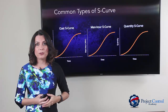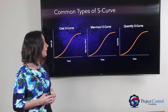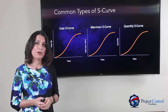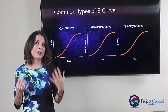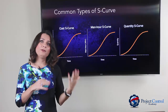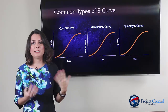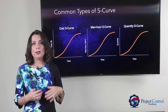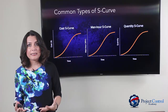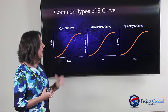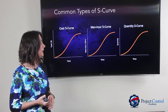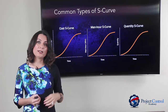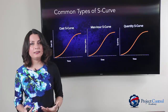A cost S-curve shows how you are going to spend your budget over time — a cash flow curve. Another popular S-curve used in projects is the manpower or FTE (full-time equivalent) curve, basically showing the available resources you have over time, either as headcount or man-hours. That's also very popular.